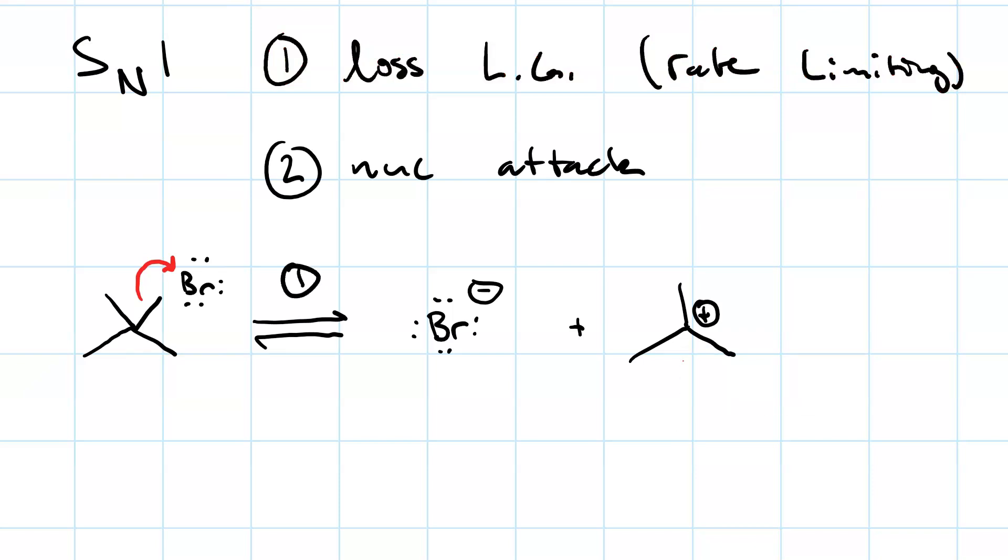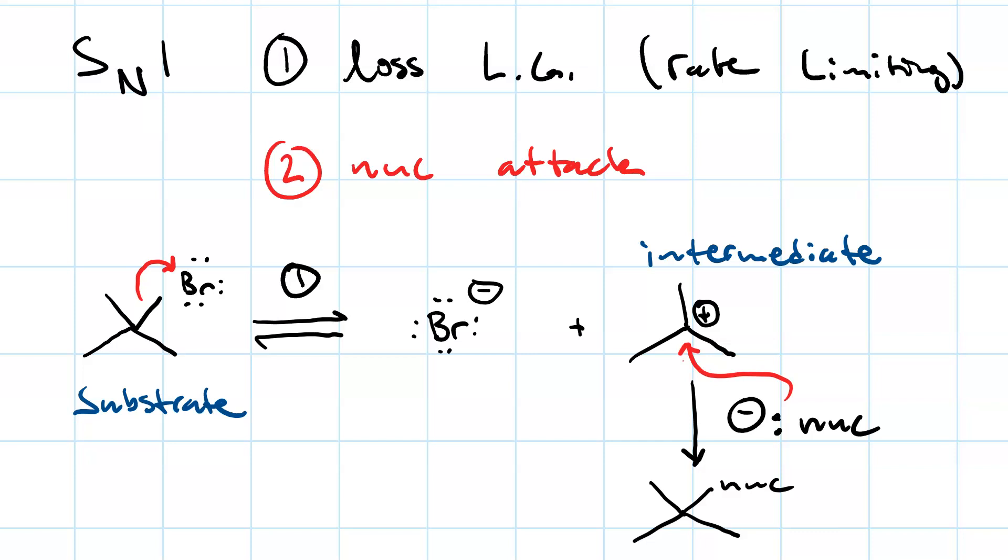Just for some terminology here, the alkyl halide is our substrate and the carbocation is an intermediate. Our second step will be nucleophilic attack, which may or may not be reversible depending on my nucleophile. My nucleophile attacks the carbocation to give us our substitution product and the leaving group. In this case, the bromide is also a product because it wasn't used in the second step.